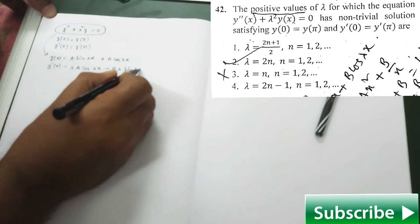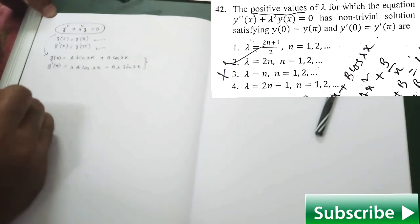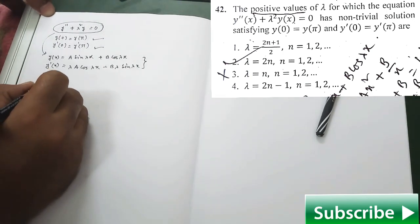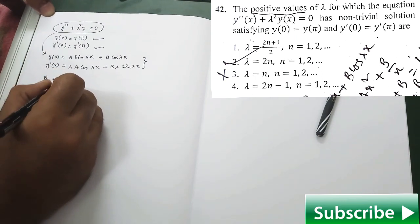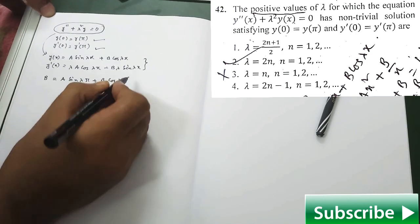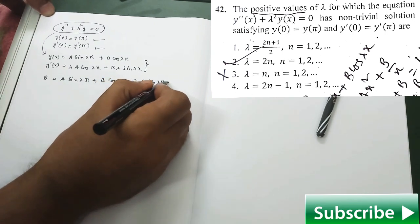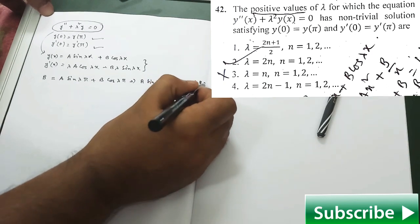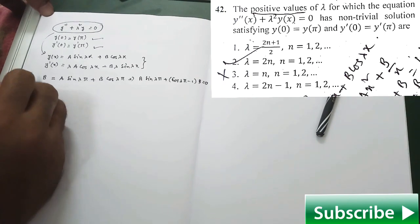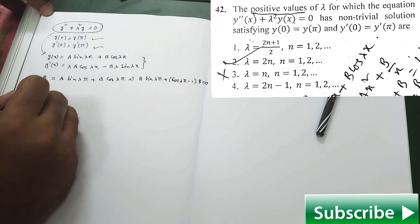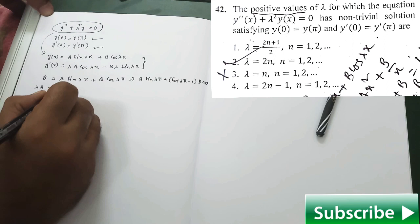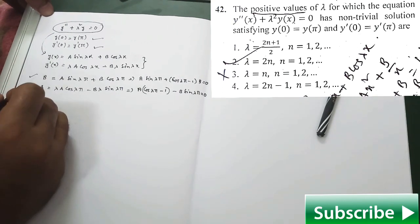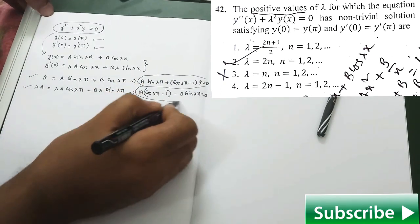Now use these two conditions separately. From the first condition you get: B equal to A·sin(λπ) + B·cos(λπ), which gives A·sin(λπ) + B·(cos(λπ) − 1) equal to 0. From the second condition you get: λA equal to λA·cos(λπ). So after applying both boundary conditions, you have these two relations.